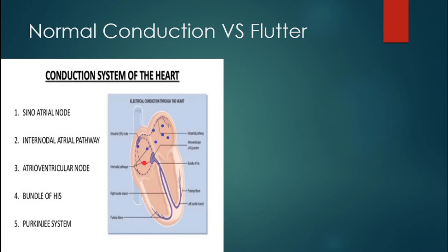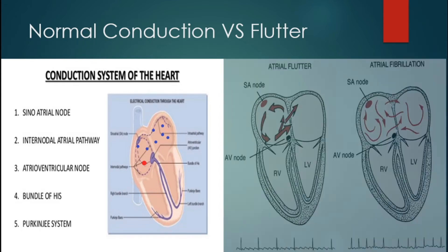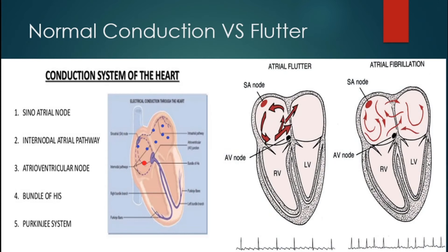There is a highly irritable area shown in red, located in the right atrium. This is an important site because this is where atrial flutter originates. You can see atrial flutter going around and around in the right atrium — this is the re-entry circuit.